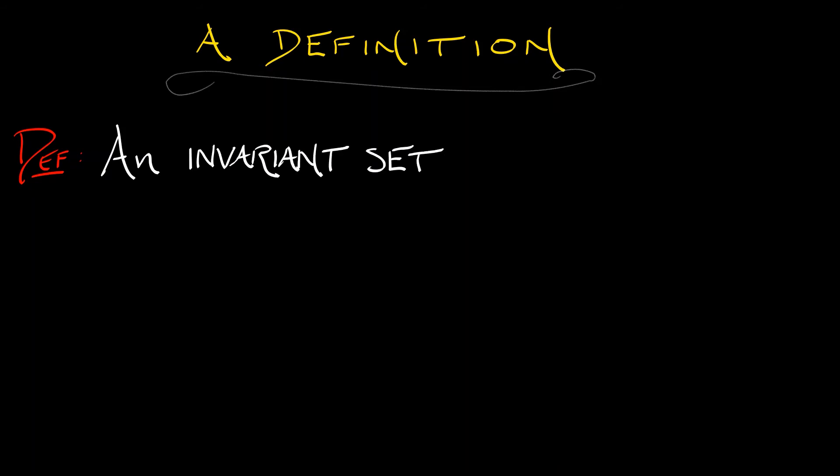Here's what our working definition is going to be. It's a little bit technical, but on the other hand, I'm not going to explain every term in here. So just work with me. We're going to say that an invariant set, lambda, is chaotic.